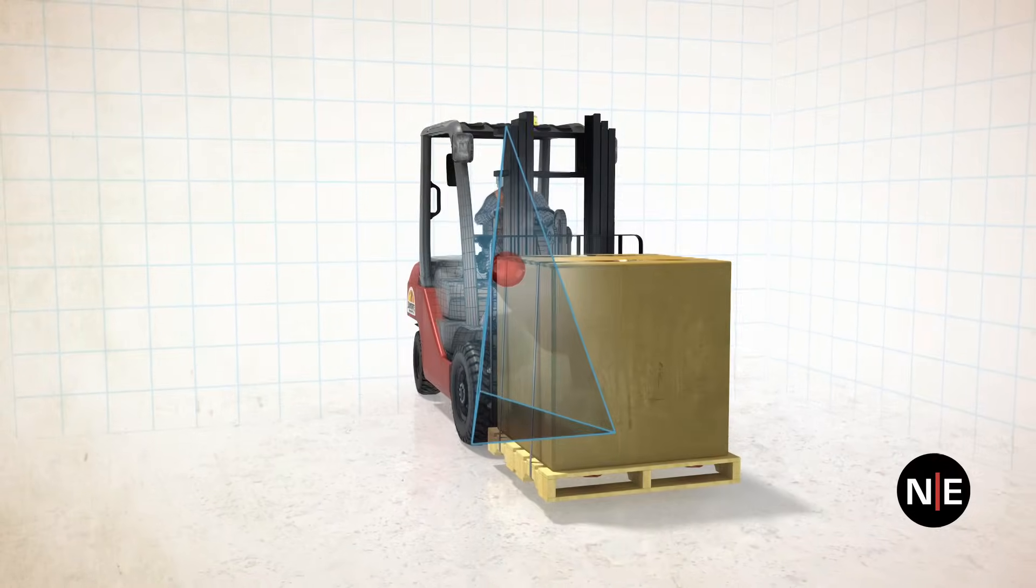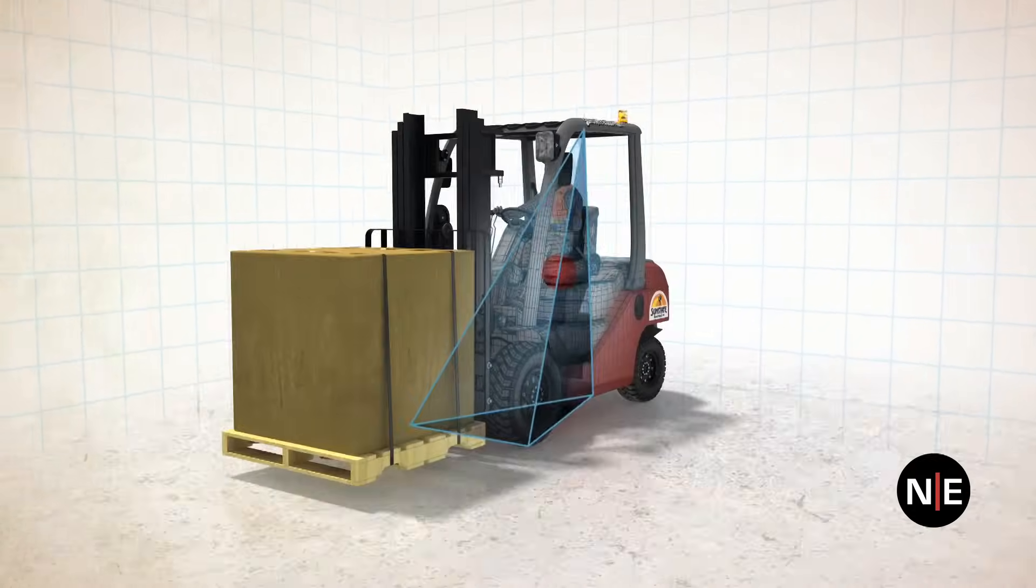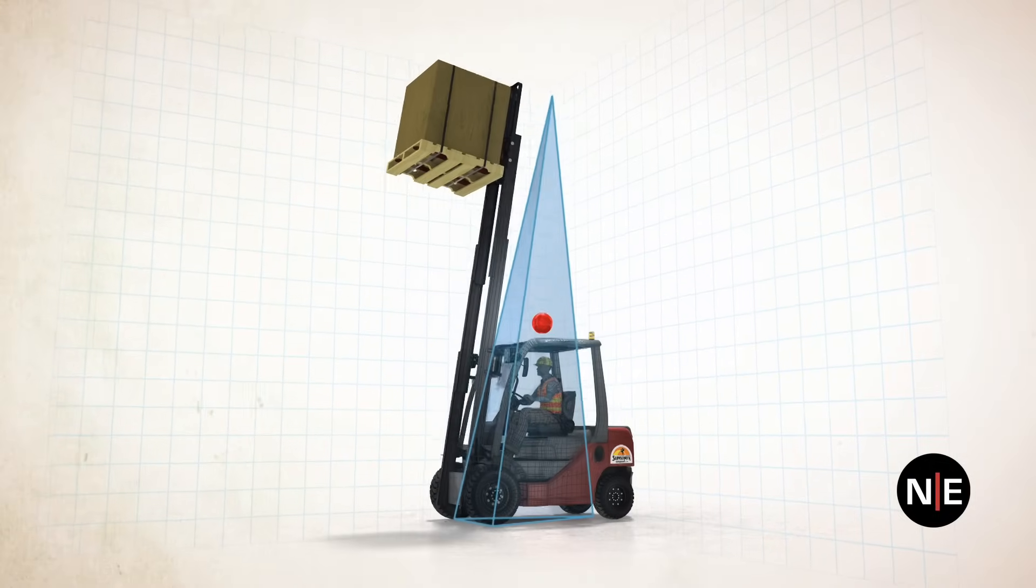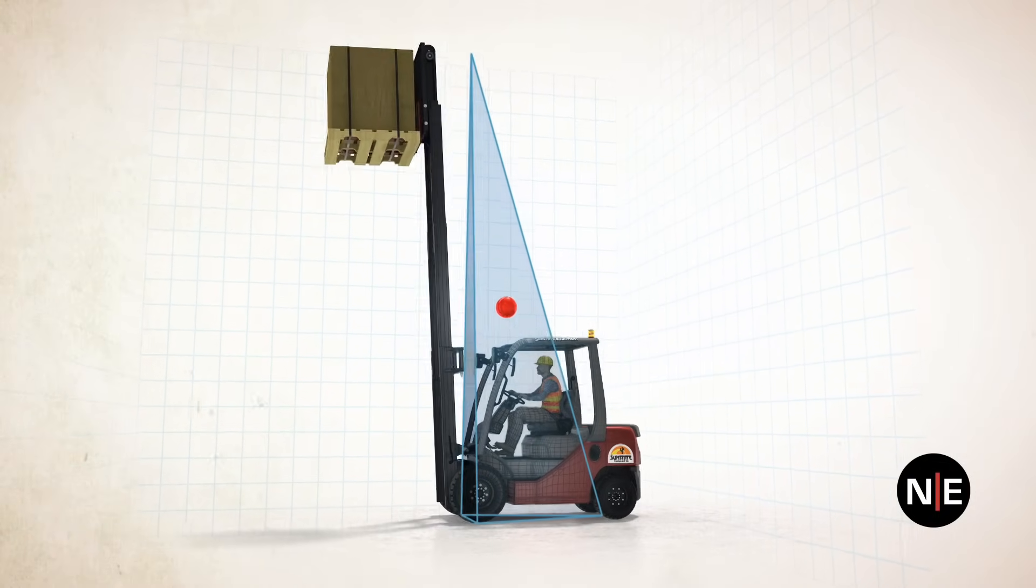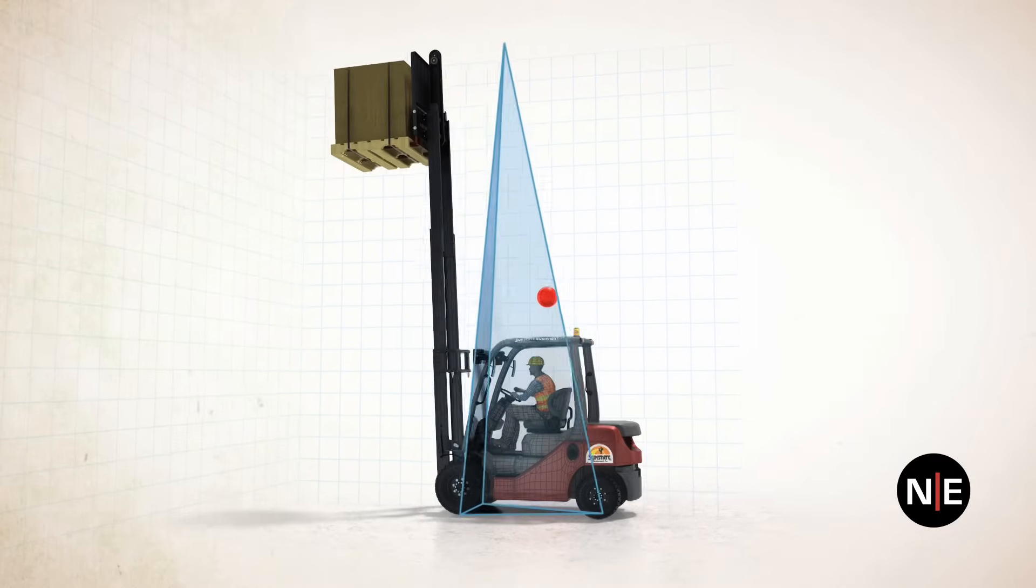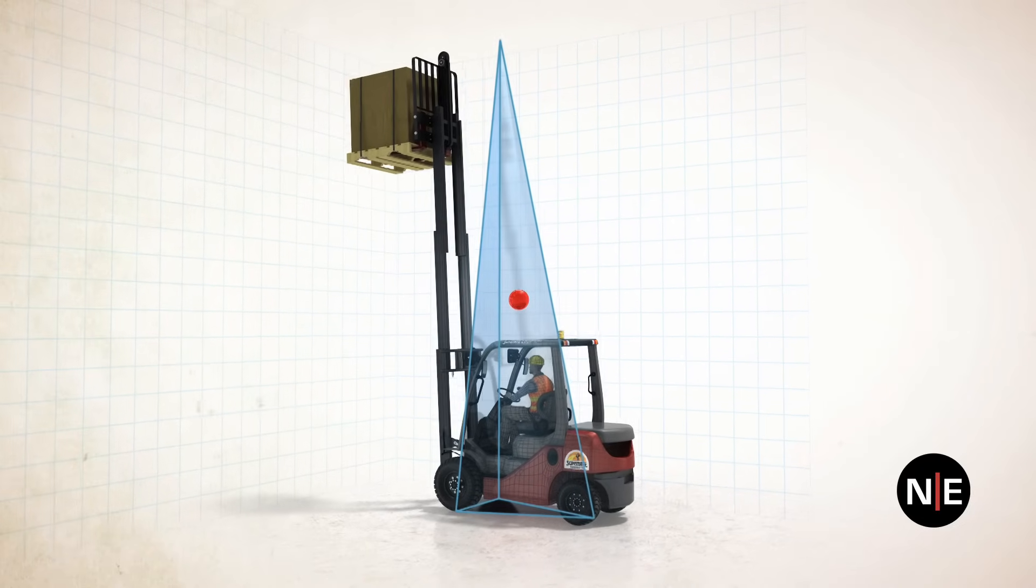When the forks are kept low, the stability pyramid is short and squat, making it relatively stable. Raising the forks elongates the stability pyramid, making it tall, skinny, and much easier to tip over.